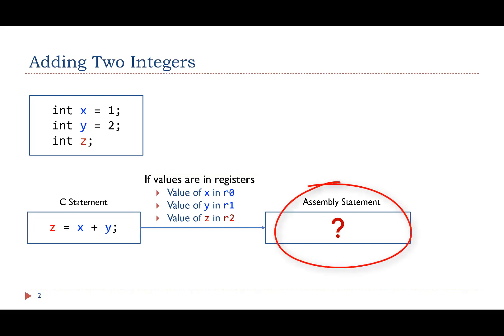How do we implement this C statement in assembly? This is the implementation using an ADD instruction. The ADD instruction takes three operands. The first operand is the destination register. The other two are source operands.